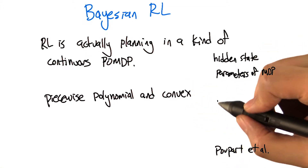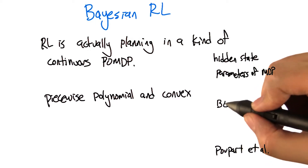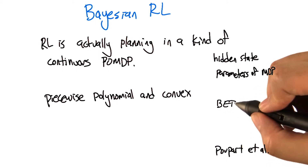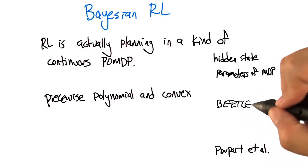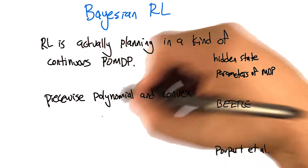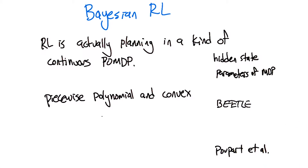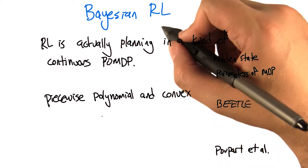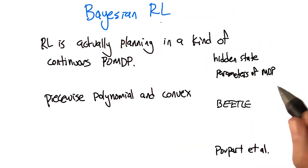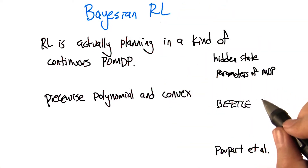There's an algorithm that actually works fairly nicely called BEETL that tries to approximate this piecewise polynomial and convex function, and can sometimes actually end up learning very good approximations of the optimal way to do reinforcement learning for those spaces of problems.